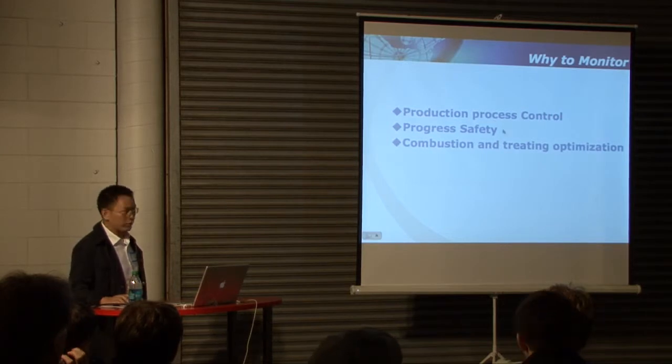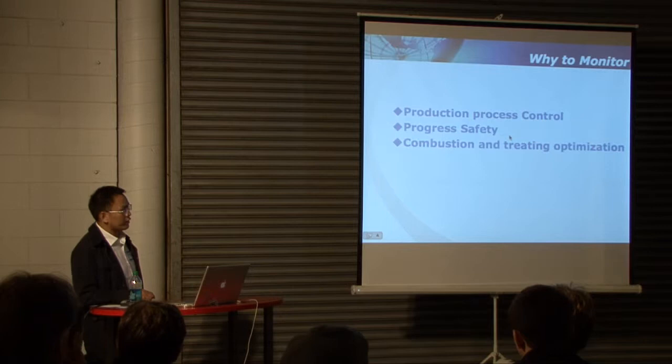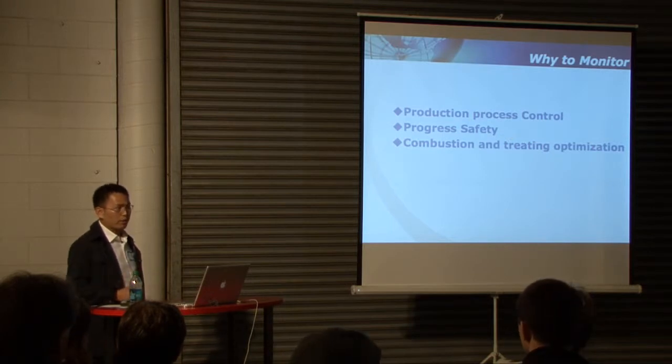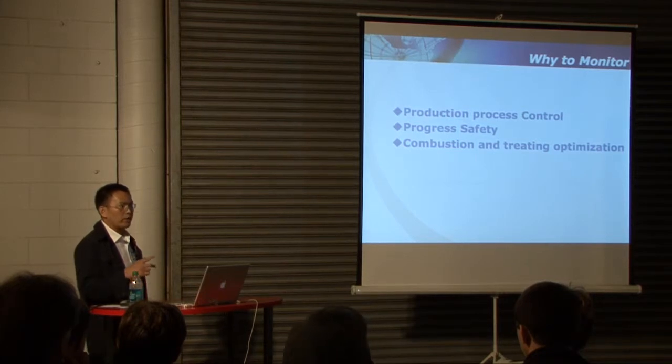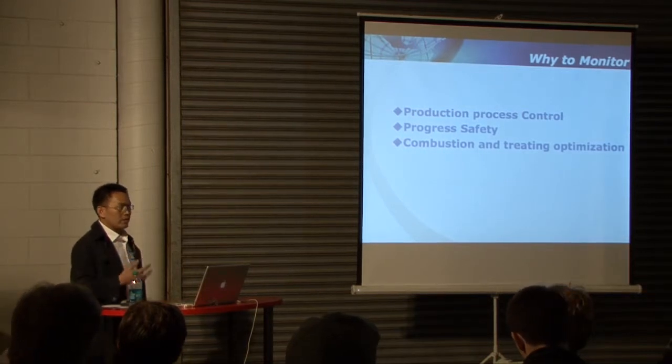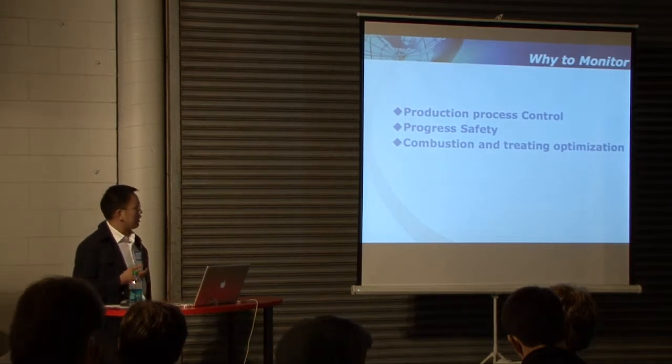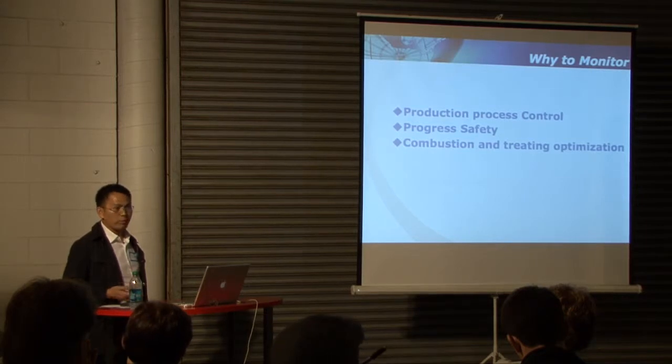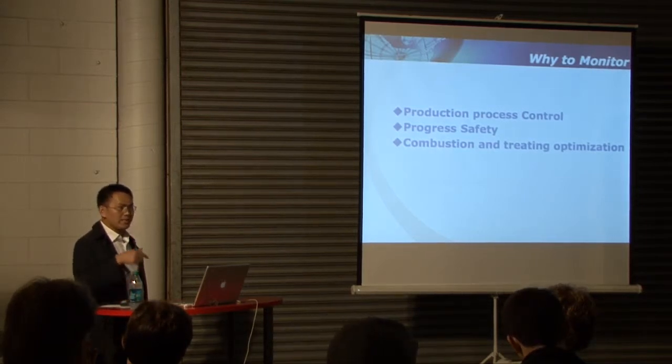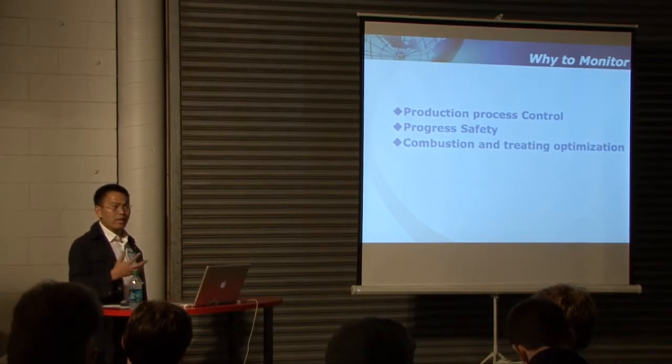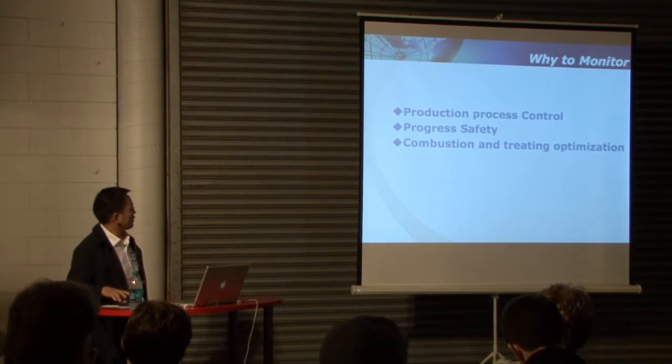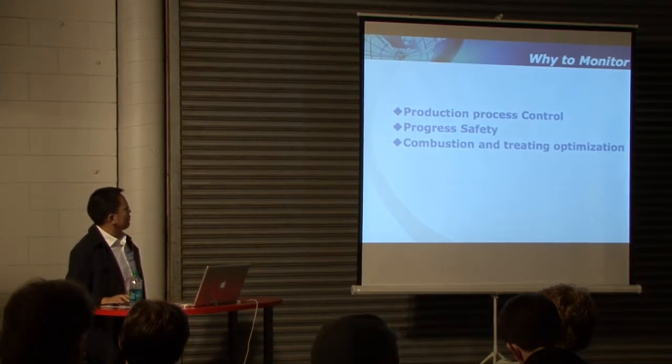The second one is the process safety. In China, for example, for the coal gasification, oxygen level is very important. Because for the tar removal, they use the ESP. With the ESP, oxygen level is very important. If the oxygen is very high, there is a problem of explosion. So oxygen level is very important also. Another example for the safety is that for the blast furnace, oxygen is very important. When the oxygen increases, it means the leakage of the water. Then this is a problem for the blast furnace. So the process safety monitor is very important also.